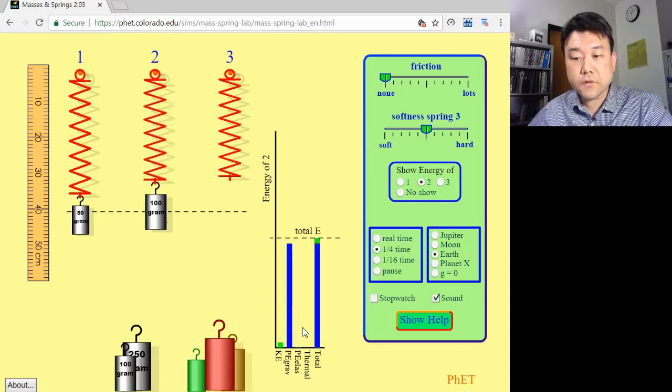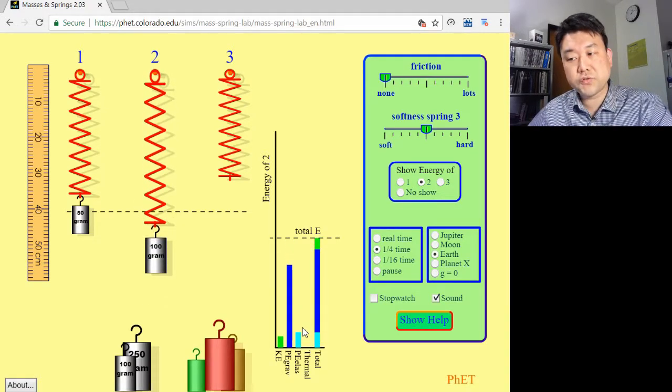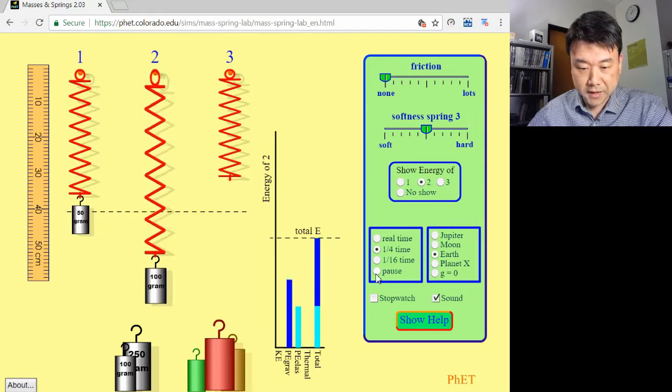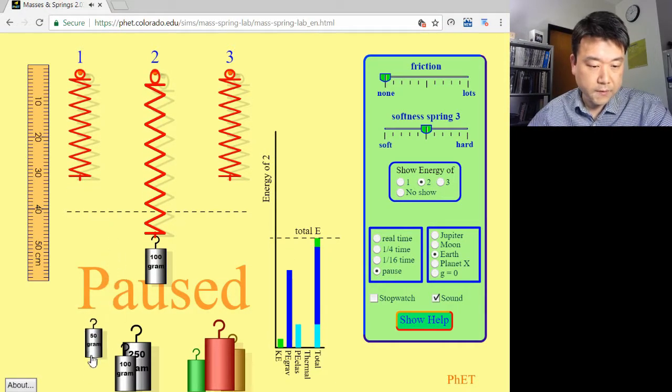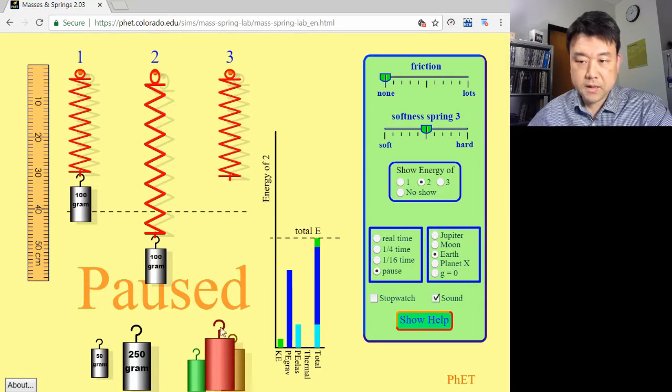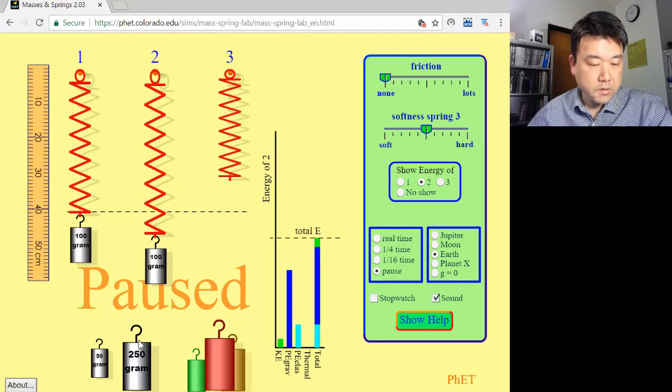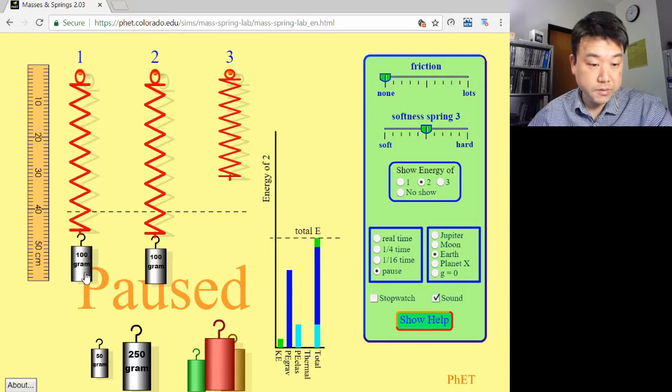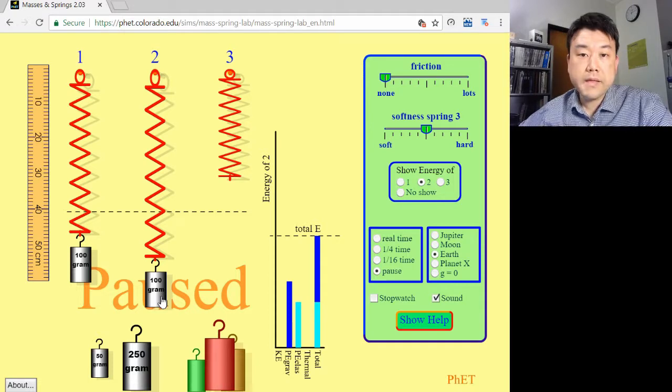All right, so far, nothing too surprising. Now, let me set up a situation here. First, stop the time while I'm setting it up. Let me remove this 50-gram mass, hang the 100-gram mass. And this is the equilibrium position. So I am going to set them at different amplitudes. Small amplitude, large amplitude.